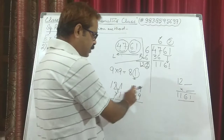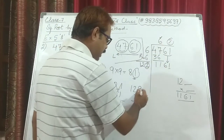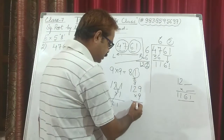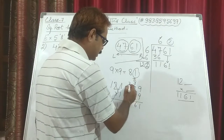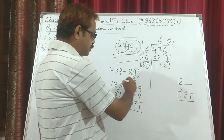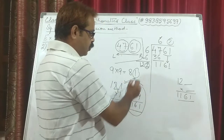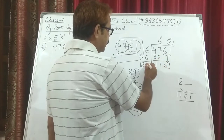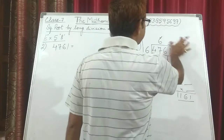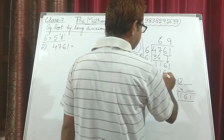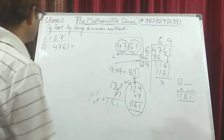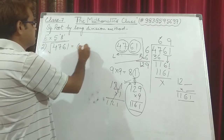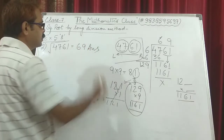Let's check with 9. We put 9 here and 9 here. 9 times 9 is 81, then 9 times 2 is 18 plus 8 gives 26, carry 2, then 9 times 1 is 9 plus 2 gives 11. So 129 times 9 equals 1161. Nothing is left as remainder. So the answer is: under root 4761 is equal to 69.